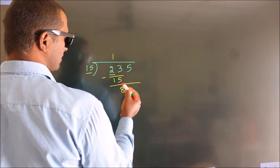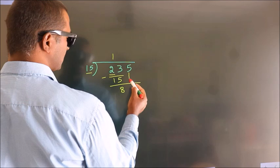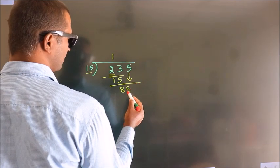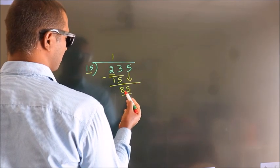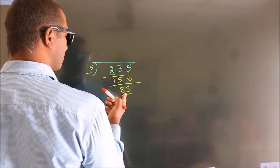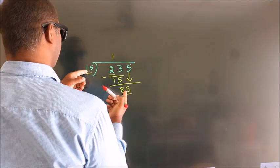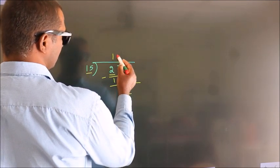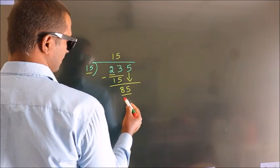After this, bring down the beside number. So 5 down. So 85. A number close to 85 in 15 table is 15 fives 75.